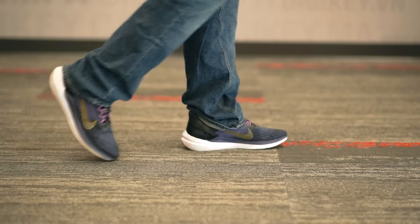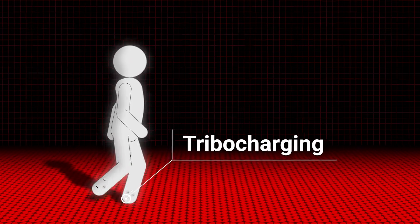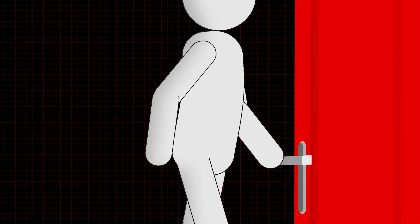You've likely encountered this after walking across a carpet and touching something and experiencing a light jolt. The action of your feet making contact and separating from the carpet is called tribocharging. This tribocharging effect causes your body to have an imbalance of electrons, which will result in an ESD event.